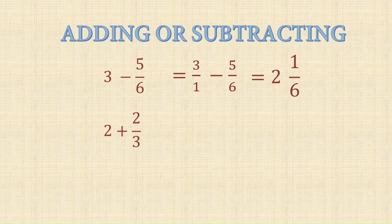To add a whole number and a proper fraction, simply write it as a mixed fraction directly — for example, 2 and 2 upon 3. Now consider adding a whole number to an improper fraction, such as 4 upon 3.